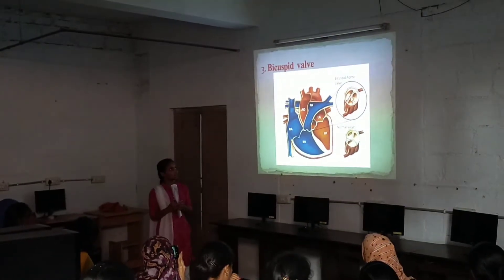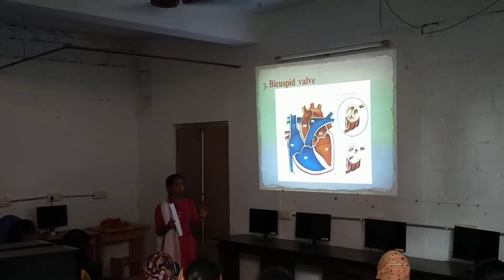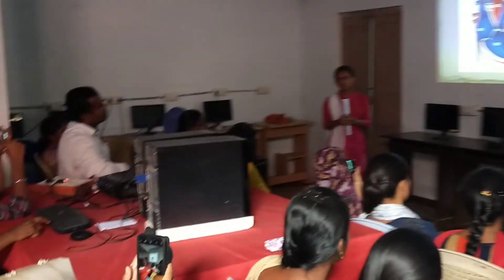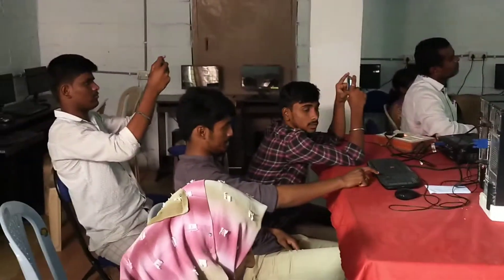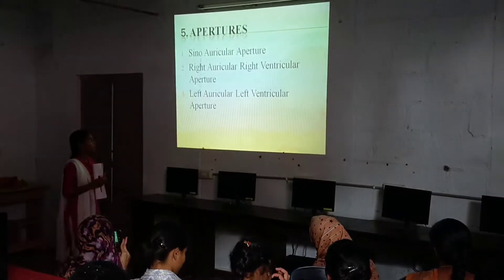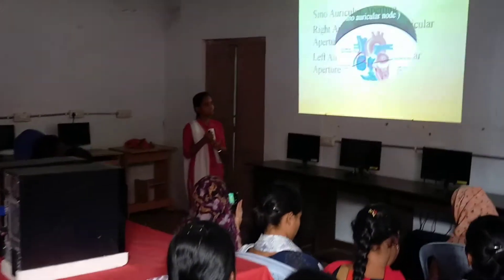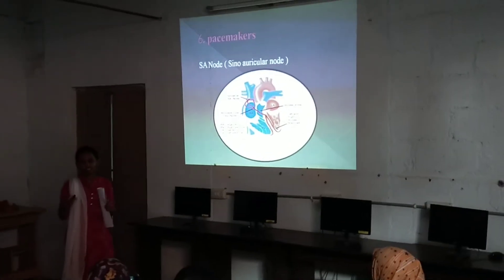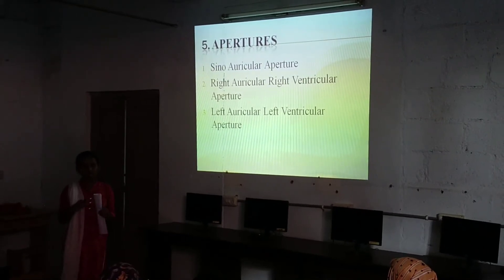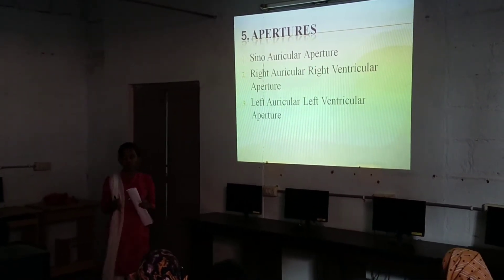The bicuspid valve is present at the left side of the auriculo-ventricular junction to the left ventricle. Apertures include: sino-auricular aperture, right auricular, right ventricular aperture, left auricular, and left ventricular aperture. The sino-auricular aperture is present at the opening of the sinus venosus, and its function is to send deoxygenated blood from the vena cava to the right auricle.